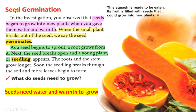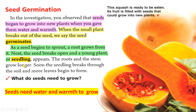Seed germination. In the investigation, you observed that seeds began to grow into new plants when you gave them water and warmth. When the small plant breaks out of the seed, we say the seed germinates. As a seed begins to sprout, a root grows from it. Next, the seed breaks open and a young plant, or seedling, appears. The roots and the stem grow longer. Soon the seedling breaks through the soil and more leaves begin to form.